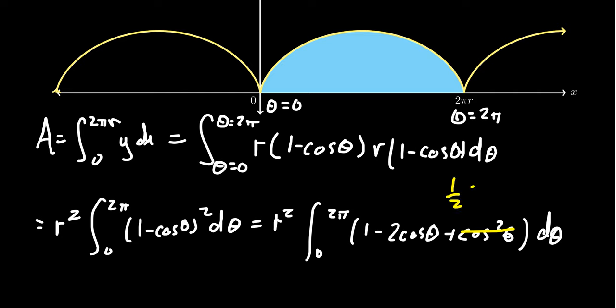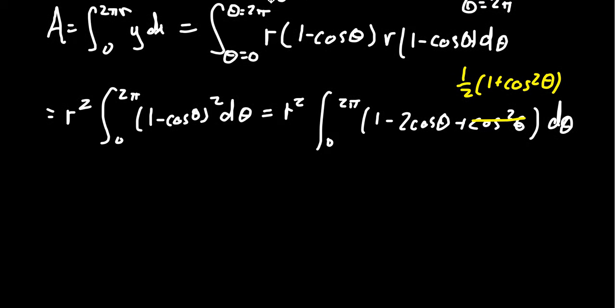We're going to want to use the half angle identity to take care of the cosine squared there. 1 half, 1 plus cosine of 2 theta. And so then if we integrate that thing, we still have the r squared out in front. And so the antiderivative of 1 is theta. Antiderivative of negative 2 cosine will be a negative 2 sine.